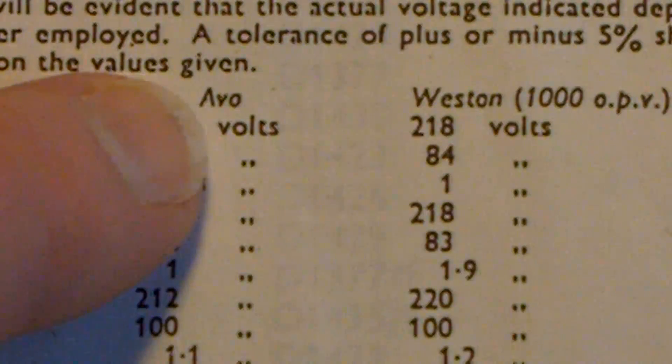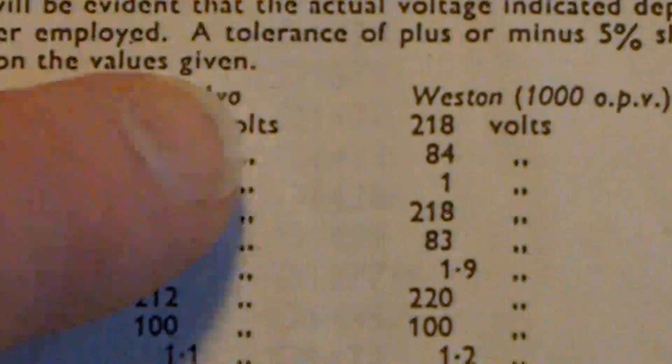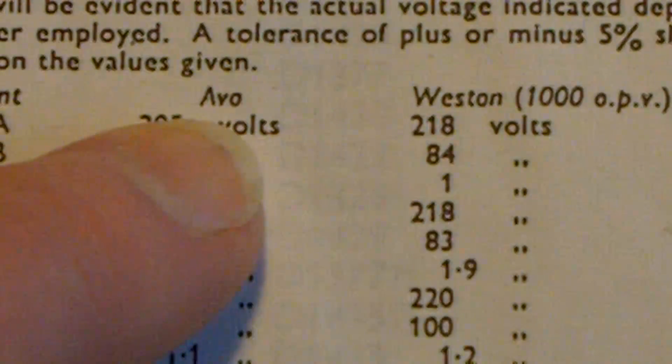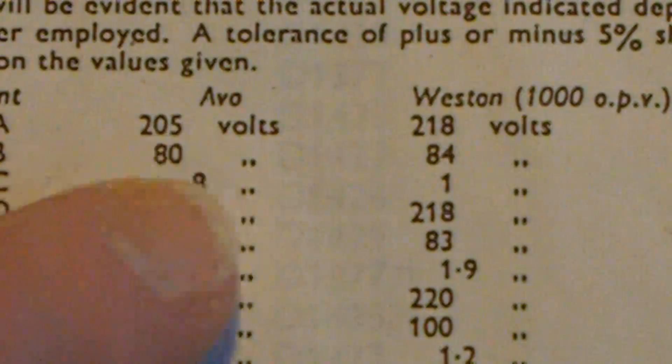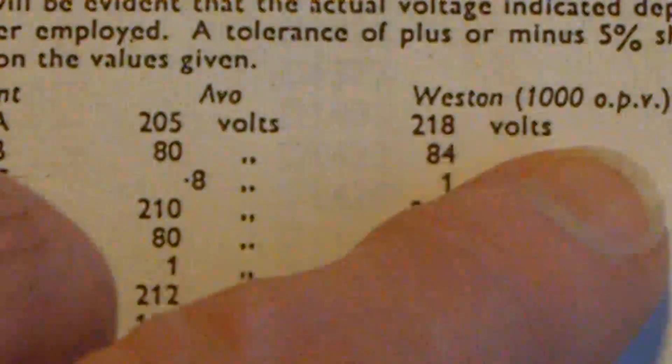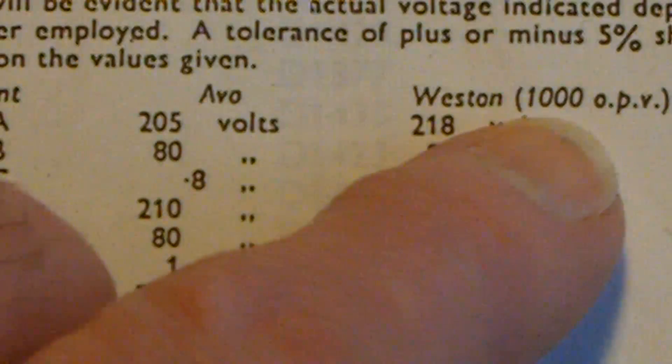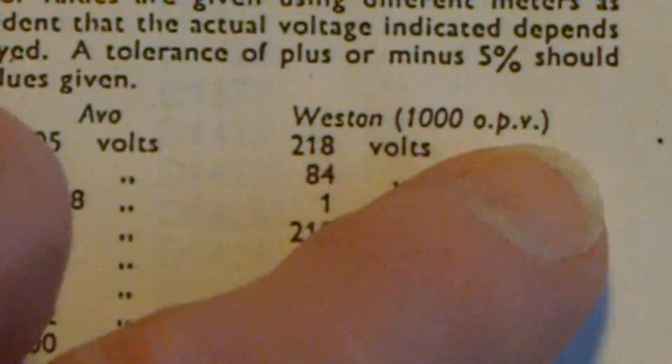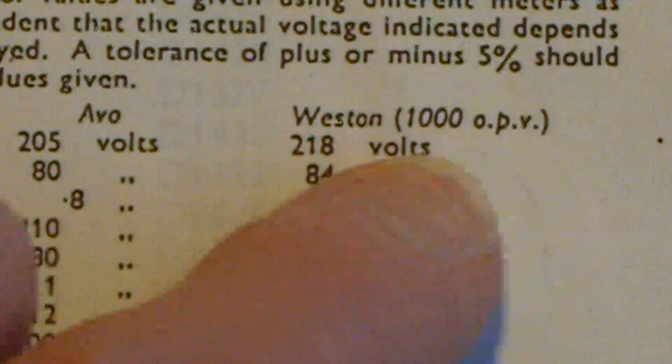And somebody's told me that the AVO here was probably an AVO7. And an AVO7 has a sensitivity of 500 ohms per volt. And the Weston has a sensitivity of 1,000 ohms per volt, OPV.